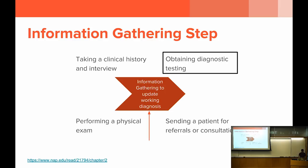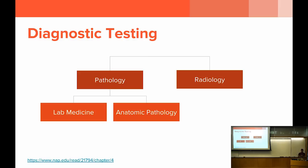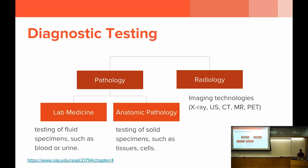Over the past hundred years, diagnostic testing has become a critical feature of standard medical practice. Mammograms of the breasts are a common diagnostic test, as are ECGs of the heart. Diagnostic testing can be broadly categorized into two categories: pathology and radiology. Pathology further breaks down into lab medicine and anatomic pathology. Lab medicine deals with testing of fluid specimens such as blood and urine, while anatomic pathology deals with testing of solid specimens such as tissues and cells. Radiology allows us to look into the human body through imaging technologies like X-rays, ultrasound, CTs, MRs, and more recently PET scans.